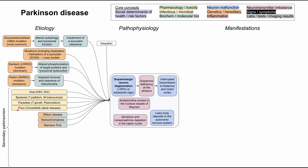There are metabolic diseases with genetic and biochemical pathophysiology that can also cause Parkinsonism. Wilson's disease — a problem of copper transport — hemochromatosis — a problem of iron overload — and Niemann-Pick disease, a glycogen storage disease, can all present with Parkinson-like symptoms.